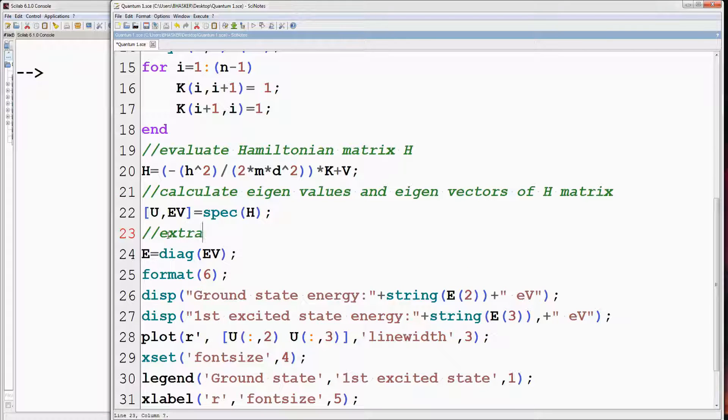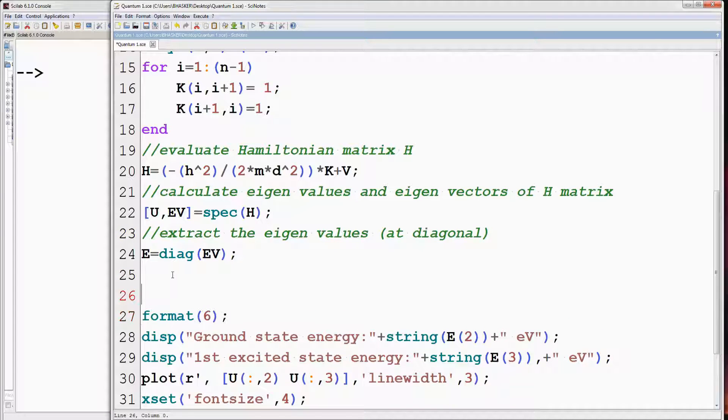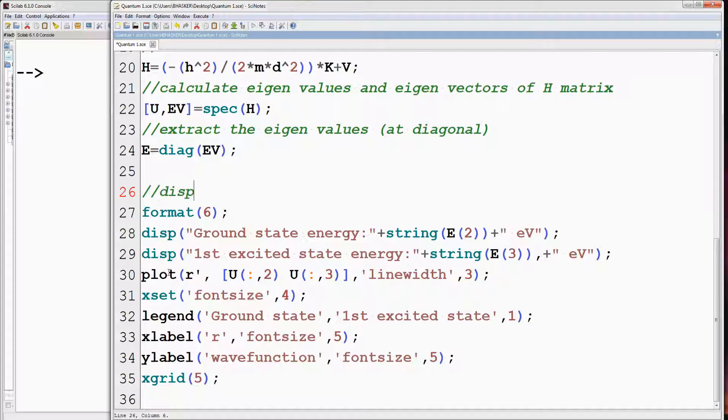Then Hamiltonian matrix is formed and its eigenvalues and eigenvectors are calculated using spec function. The eigenvalues at diagonal are extracted. Finally, the energy eigenvalues are displayed and corresponding eigenfunctions are plotted.